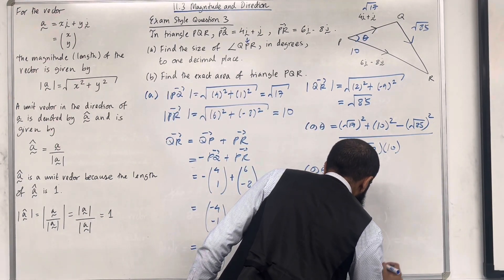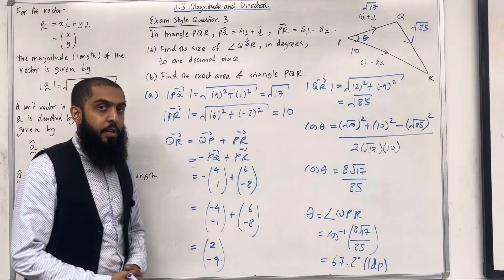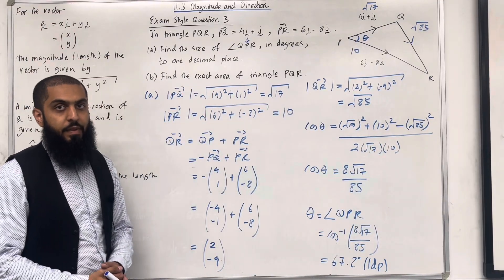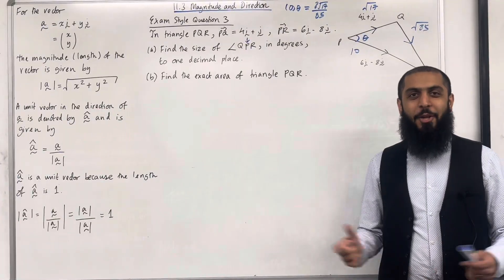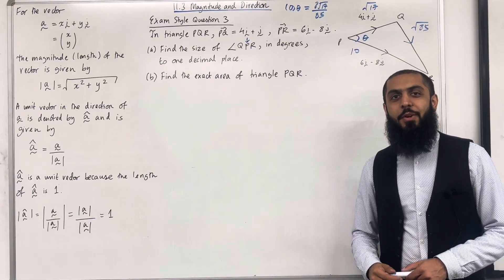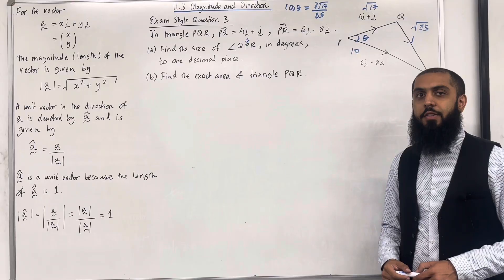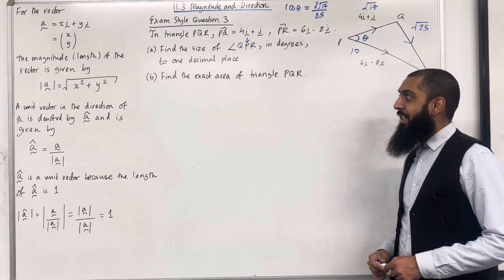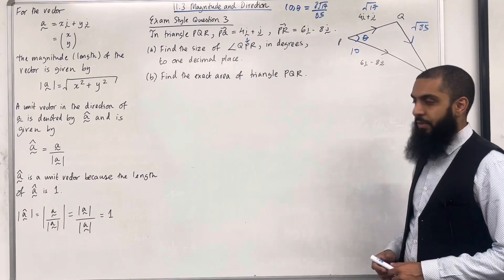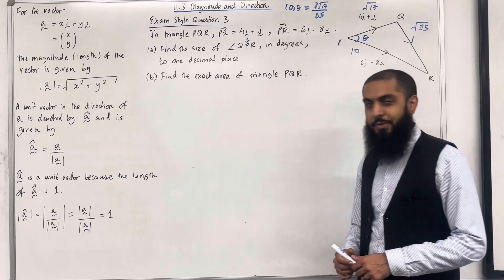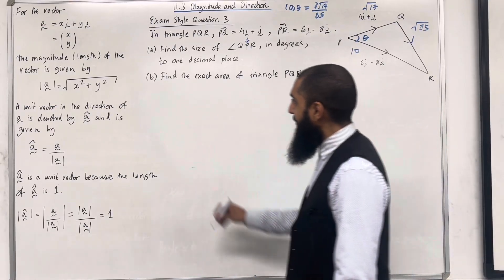That completes part A of exam style question 3. Moving on to the final part: part B — find the exact area of triangle PQR.